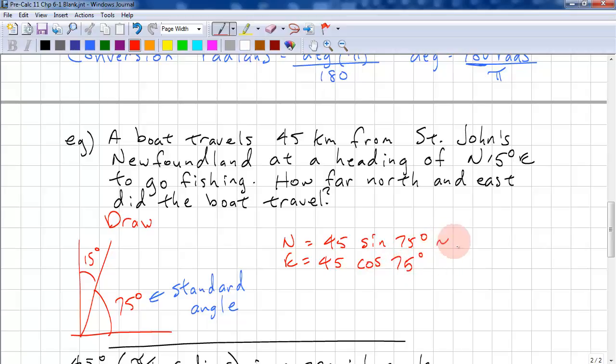So, this is approximately 45 times 0.966, and this is 45 times 0.2588. This gives us approximately 43.5 kilometers, and this gives us 11.7 kilometers. Don't forget your units.